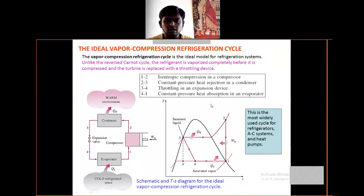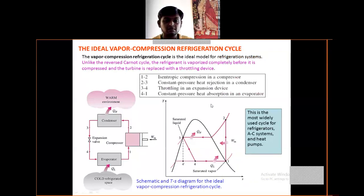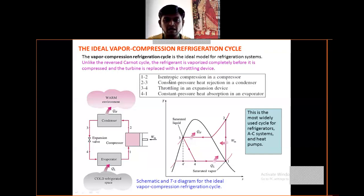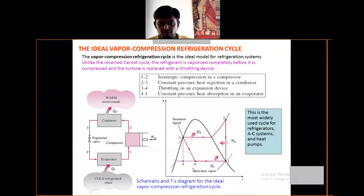Now, the ideal vapor compression refrigeration cycle. Process one-to-two is isentropic compression in the compressor. Then constant-pressure heat rejection in the condenser. Then throttling in the expansion device. Then constant-pressure heat absorption in the evaporator.